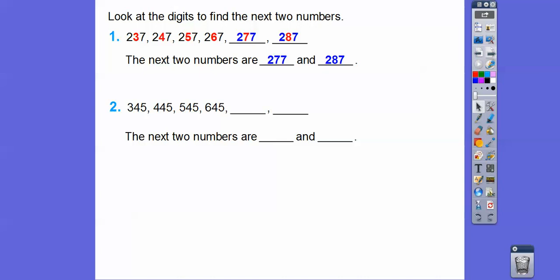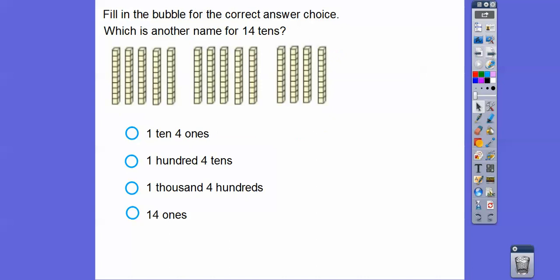Let's look at the next one. This one says 345, 445, 545, 645. So the only number that's changing is the hundreds digits. So we're going to add one. This is going to be 745 and then 845. The next two numbers are 745 and 845.